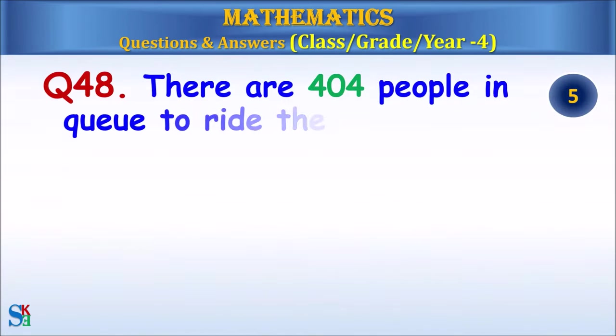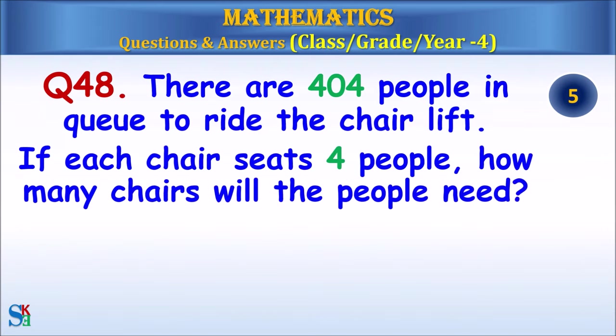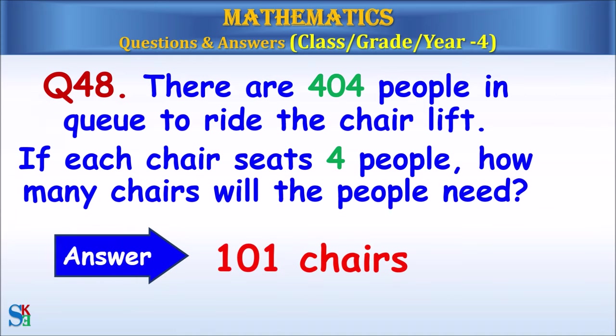Question 48: There are 404 people in a queue to ride the chairlift. If each chair seats 4 people, how many chairs will the people need? The answer is 101 chairs.